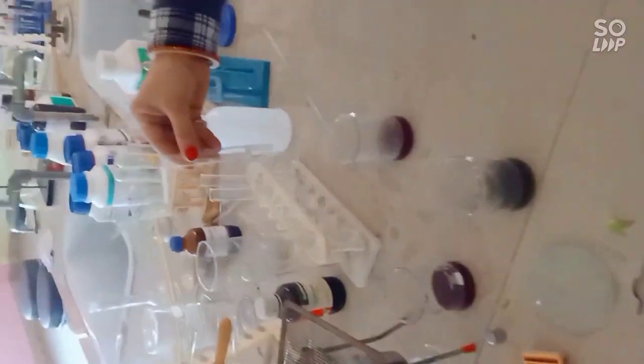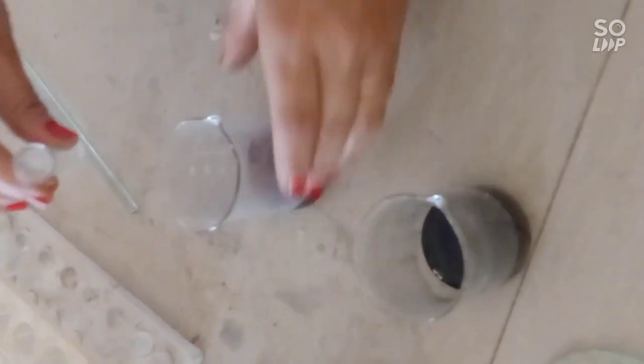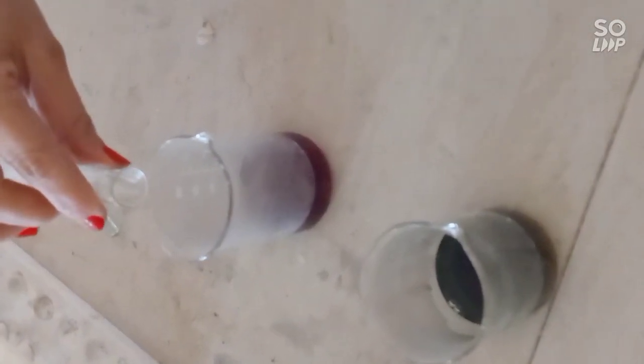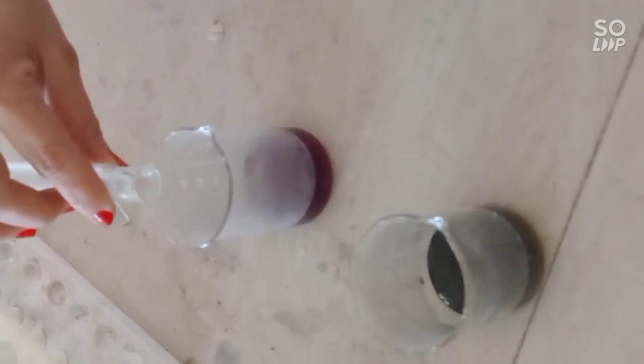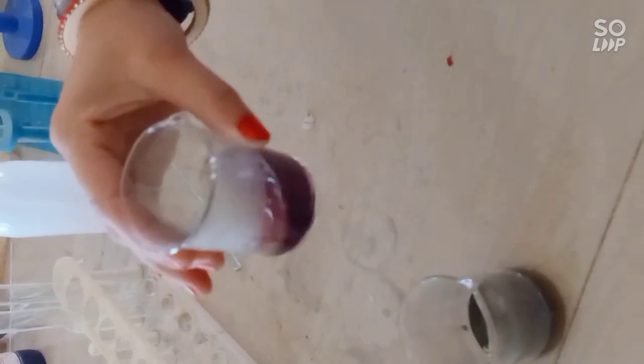Now I have taken acidic solution. I am going to add this acid in the other beaker having the china rose indicator. As you can see, the color of this liquid becomes reddish in color by adding acid.